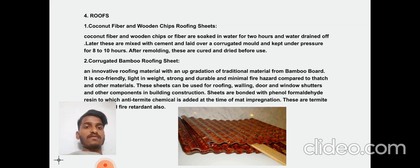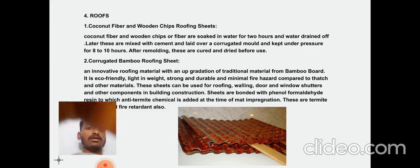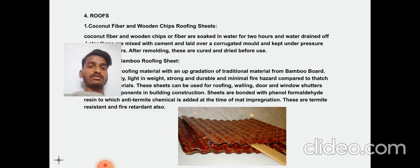Corrugated bamboo roofing sheet is an innovative roofing material made from traditional bamboo board. It is eco-friendly, lightweight, durable, and provides minimal fire hazard compared to other materials. The sheet is used for roofing, doors, windows, shutters, and components. It is bonded with a phenol-formaldehyde base to which anti-termite chemical is added, providing termite resistance. It also has fire-retardant properties.